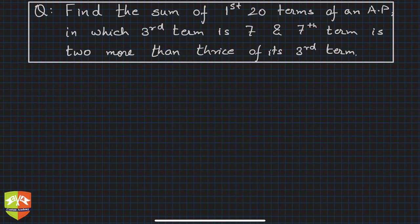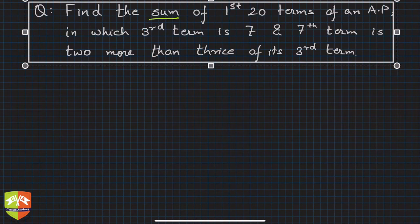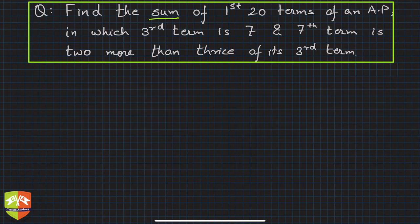Hello and welcome to another problem-solving session on sum of n terms of an arithmetic progression. The given question says: find the sum of 20 terms of an AP in which the third term is 7 and the seventh term is two more than thrice the third term. So we'll have to frame some equations first, write the relationships, and then solve this problem.